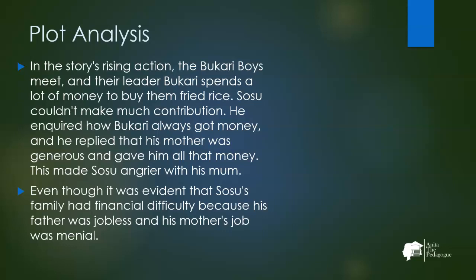In the rising action, the Bukhari Boys meet and their leader Bukhari spends a lot of money to buy them fried rice. Sosu couldn't make much contribution. He inquired how Bukhari always got money, and Bukhari replied that his mother was generous. This made Sosu angrier with his mom, even though it was evident Sosu's family had financial difficulty — his father was jobless and his mother sold beads, which was a menial job. Yet Sosu still expected his parents to give him a lot of money.